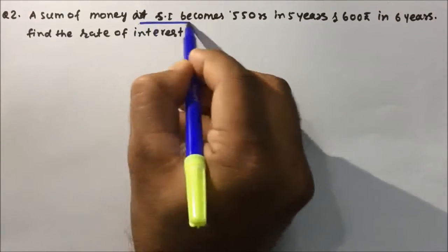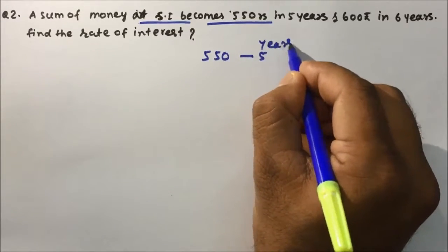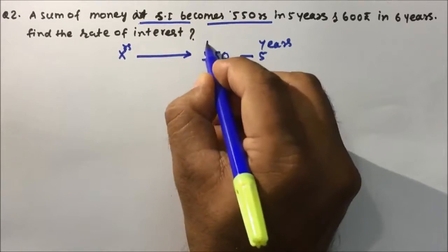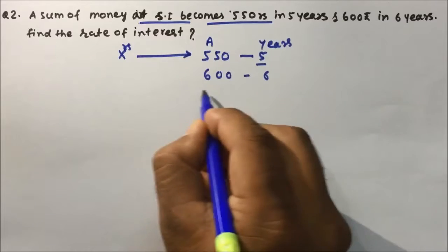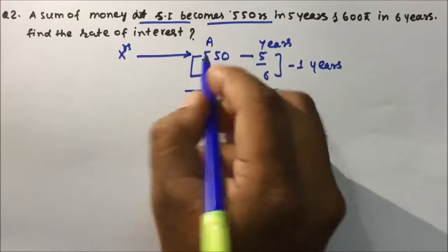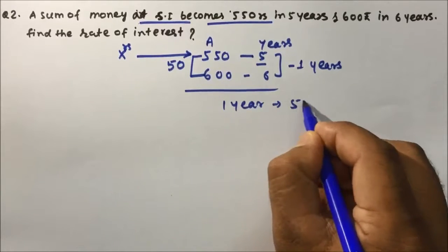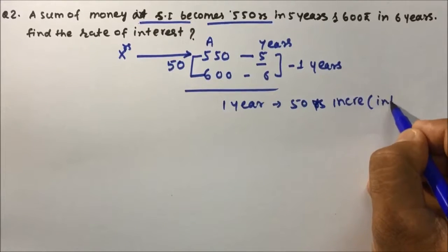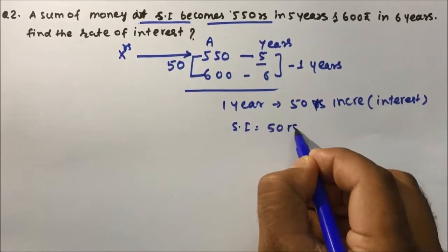Question number two: a sum of money at simple interest becomes 550 in 5 years and 600 in 6 years. Suppose you invested X rupees. In 1 year, what is the increment in the amount? 50 rupees is the increment, so the simple interest per year is 50 rupees.